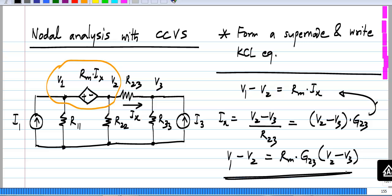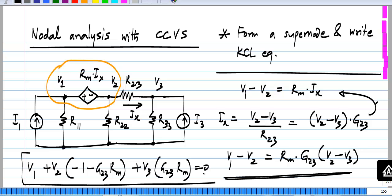Now as with the voltage control voltage source the right hand side also consists of variables. So we take them to the left hand side and write V 1 plus V 2 times minus 1 minus G 2 3 R m plus V 3 times G 2 3 R m to be equal to 0.